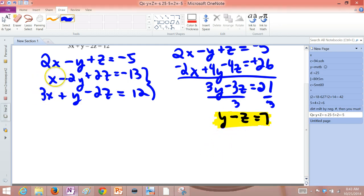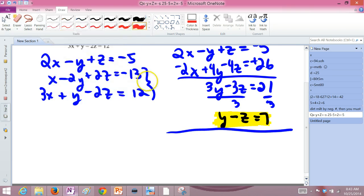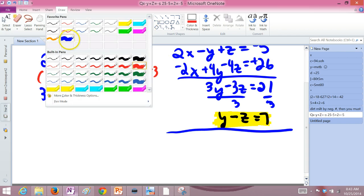So how can we get rid of the x with the second and third? We'd have to multiply by a negative 3 on that second equation. So let me just jot that down, what I just said. We are about to take the second equation and multiply it by negative 3.